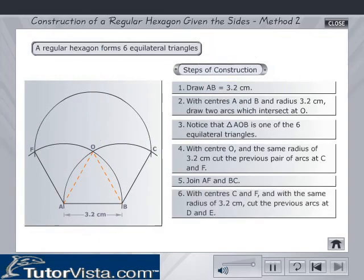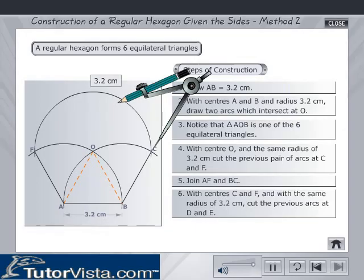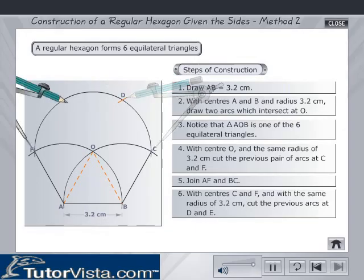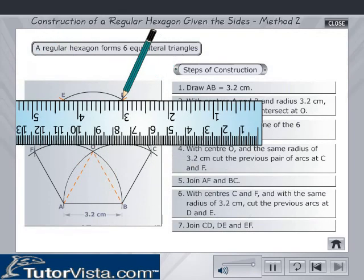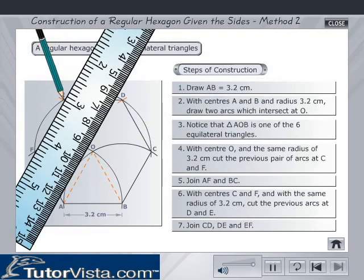With centers C and F and with the same radius of 3.2 cm, cut the previous arcs at D and E. Join CD, DE and EF.